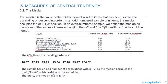The next thing that we're going to look at is the median, and the median is the value of the middle item of a set of items that has been sorted into ascending or descending order. In an odd number sample of n items, the median occupies the (n+1)/2 position. An example makes the understanding of the median a lot easier.